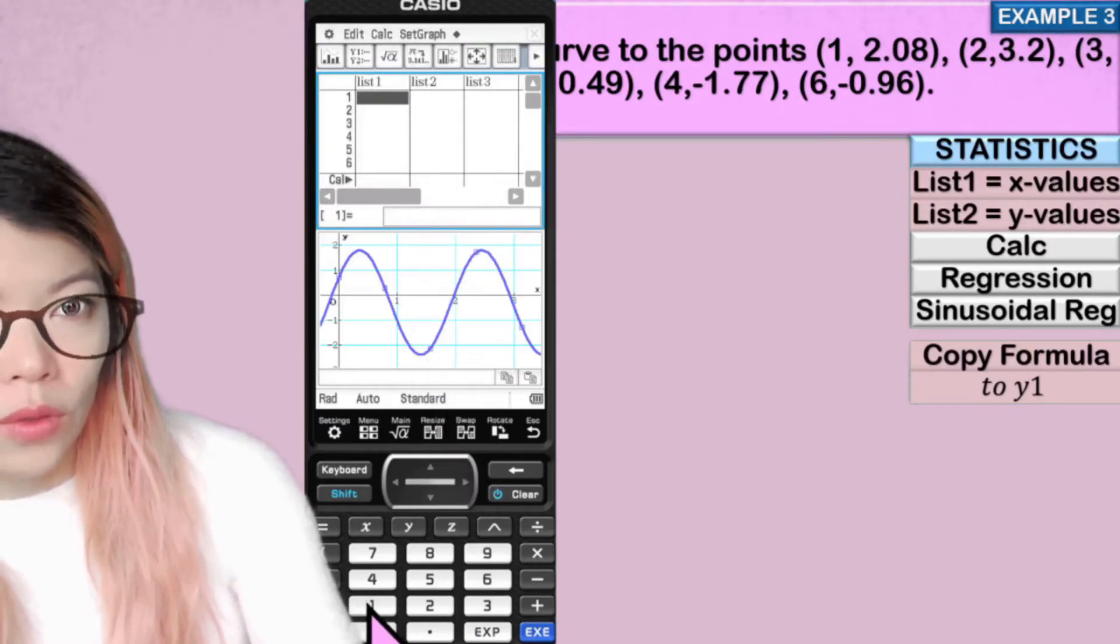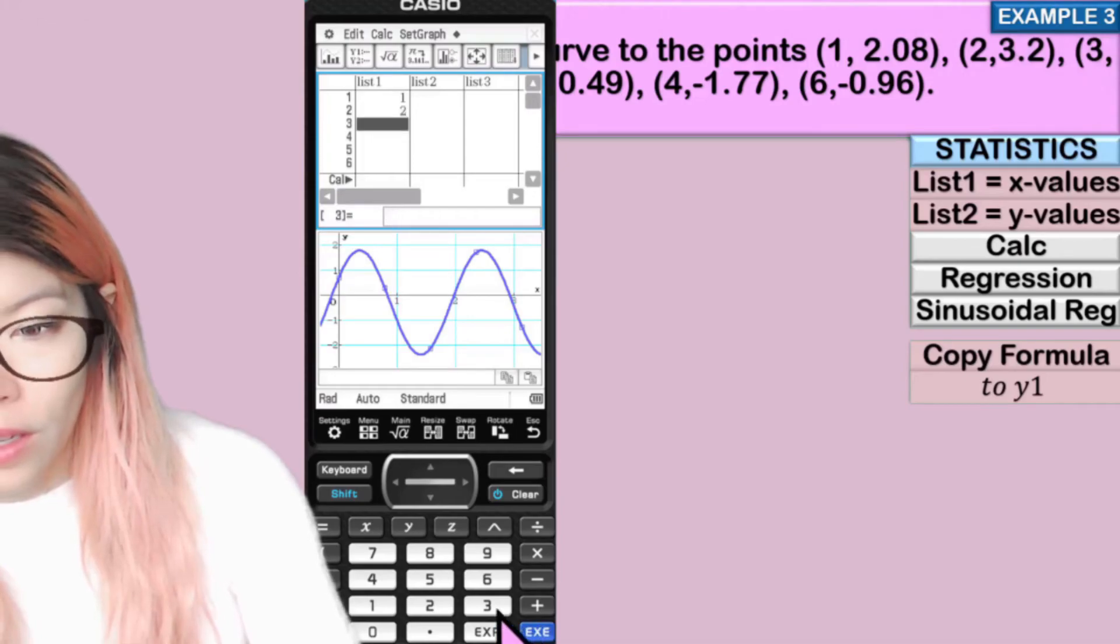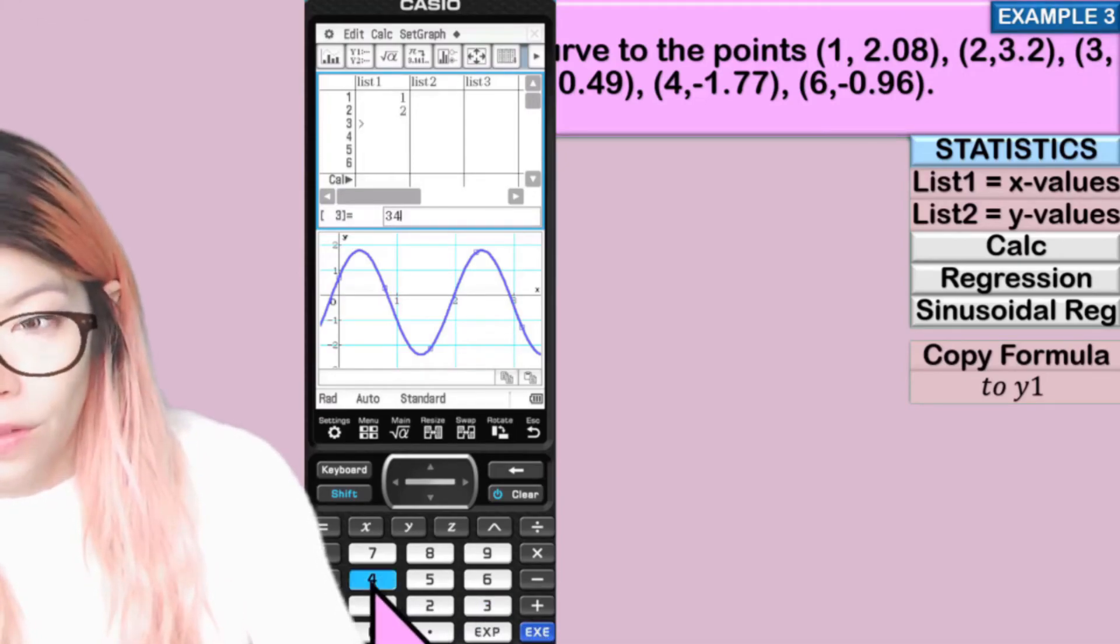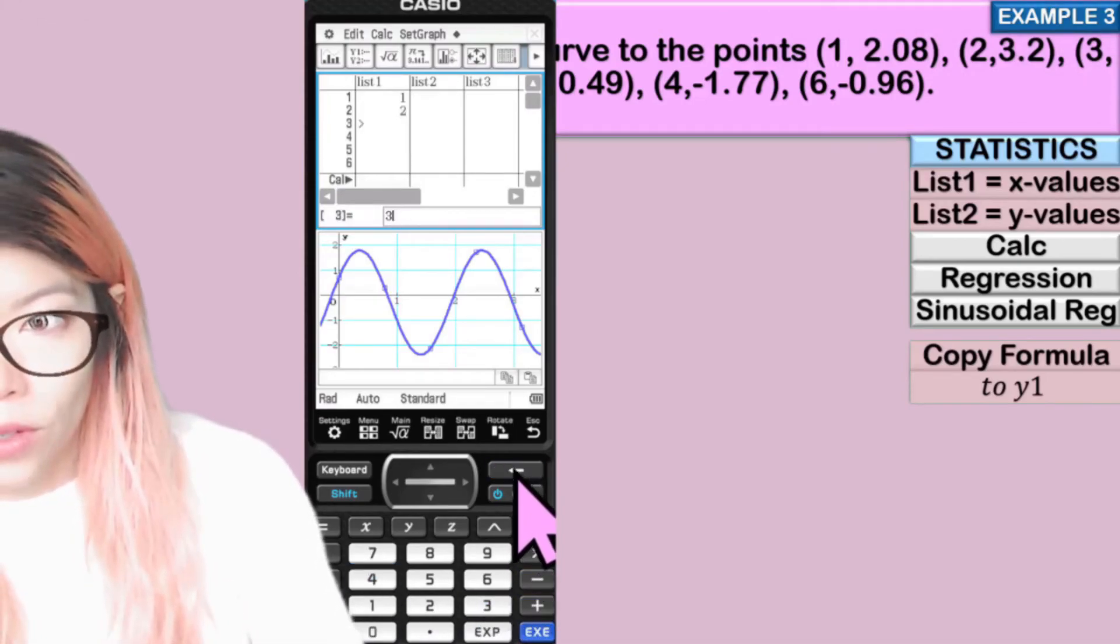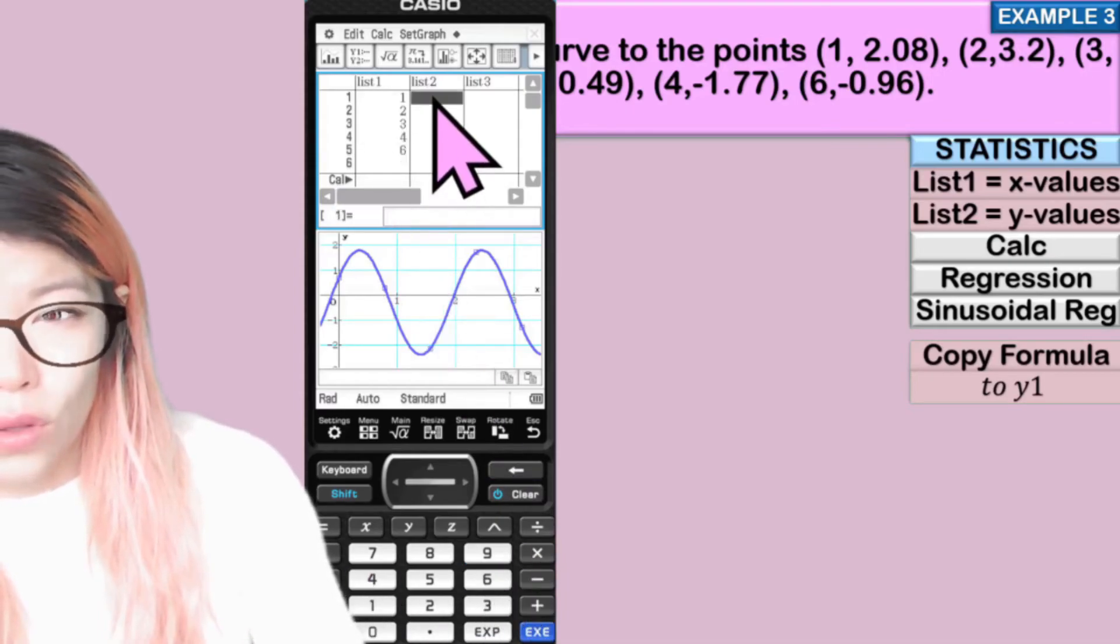So in list one, now we have our x values. 1, 2, 3, 4, and 6.